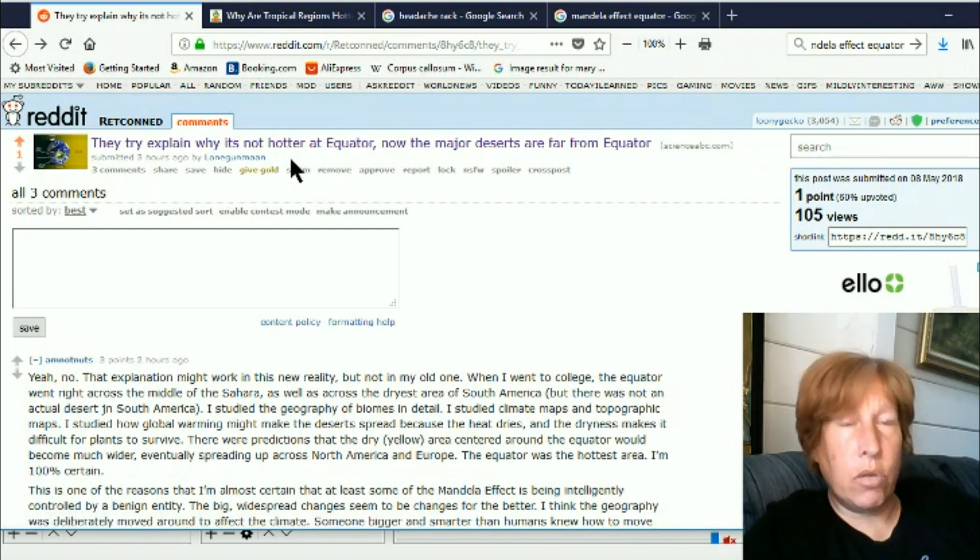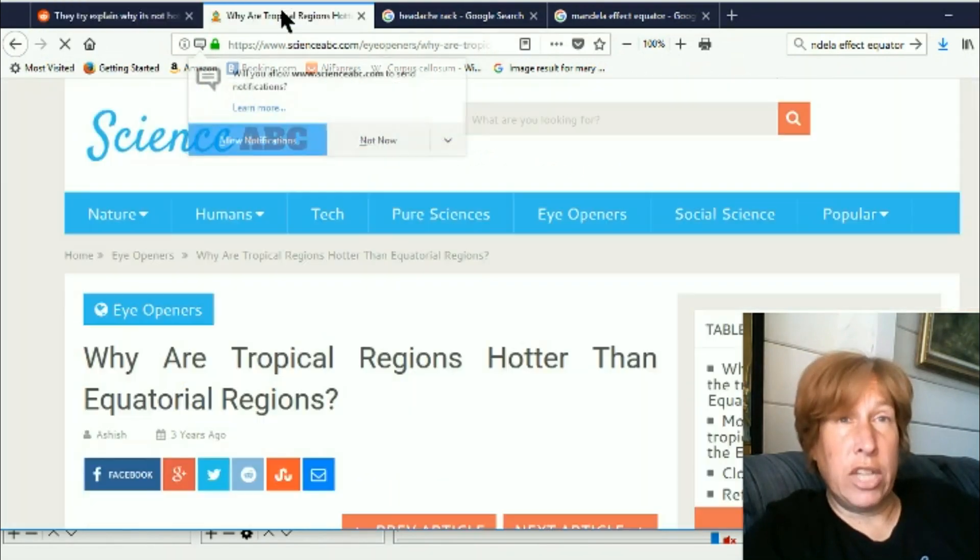This person finds quite a few good Mandela effects and has posted on retconned. They tried to explain why it's not hotter at equator. Now the major deserts are far from equator. Check this out.